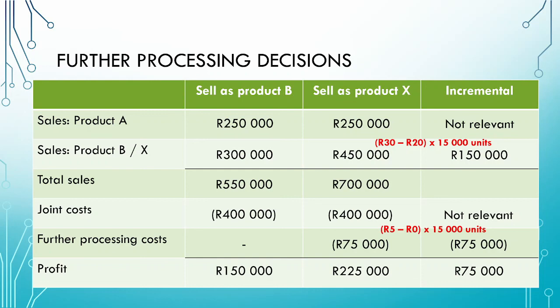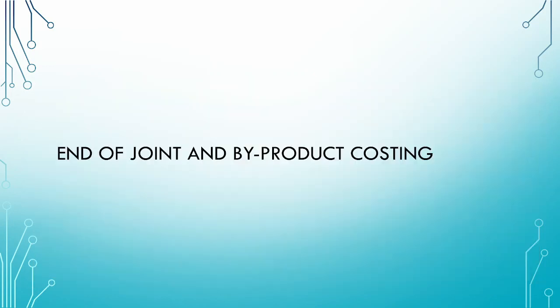Now that you have seen the basic principles for determining if joint costs are relevant to a decision, think about what type of decisions would cause the joint costs to change and therefore make them relevant. Give it some thought and type your answers in the comments below. This brings us to the end of our series on joint and byproducts. Be sure to join us in our next series.